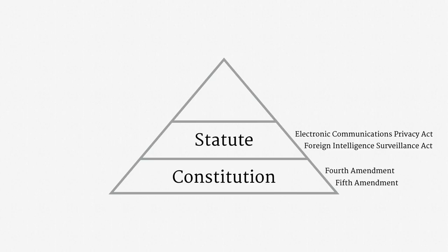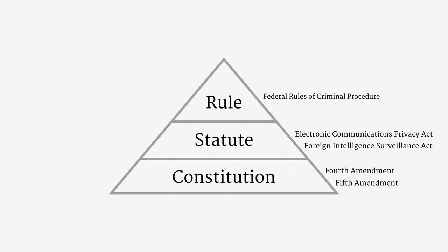Finally, a statute can delegate some legislative responsibility to an administrative body, which then produces rules that also have the force of law. Under the Rules Enabling Act, the judiciary can promulgate procedural court rules. We'll spend a little time with the Federal Rules of Criminal Procedure, which govern grand jury subpoenas and warrants. We'll also look at the Communications Assistance to Law Enforcement Act, or CALEA, which grants some surveillance-related powers to the Federal Communications Commission.